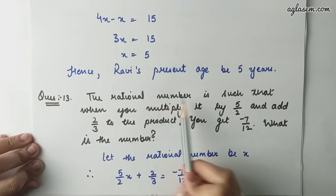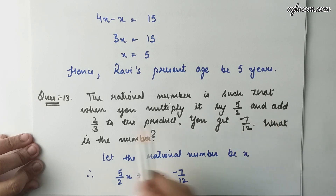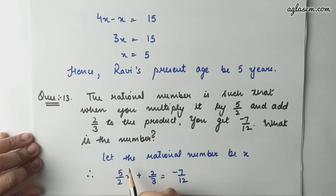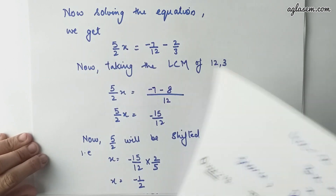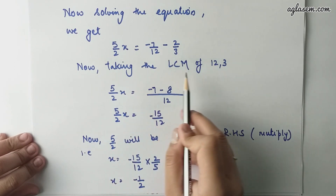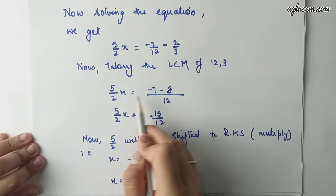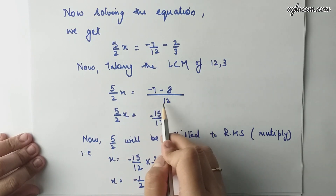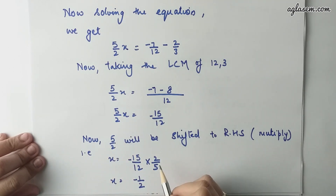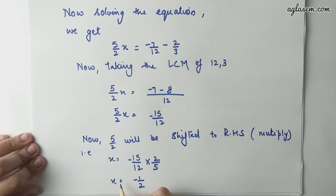Question number 13: A rational number is such that when you multiply it by 5 by 2 and add 2 by 3 to the product, you get minus 7 by 12. What is the number? Let the rational number be x. Therefore, 5 by 2 times x plus 2 by 3 equals to minus 7 by 12. Solving, 5 by 2 times x equals to minus 7 by 12 minus 8 by 12, giving 5 by 2 times x equals to minus 15 by 12. Therefore, x equals to minus 15 by 12 into 2 by 5, which gives x equals to minus 1 by 2.